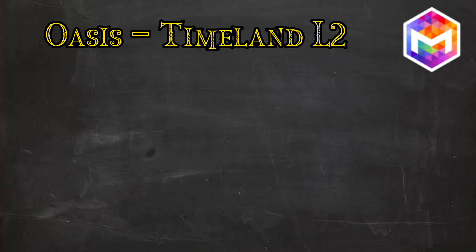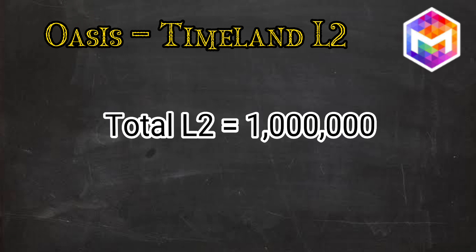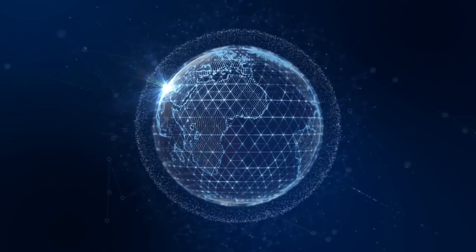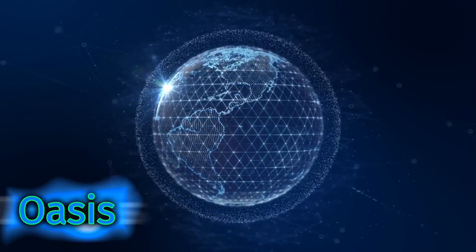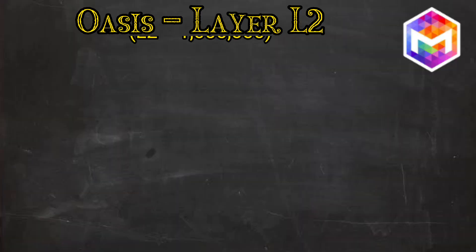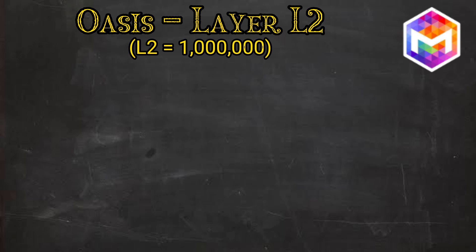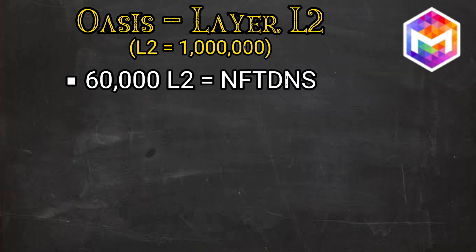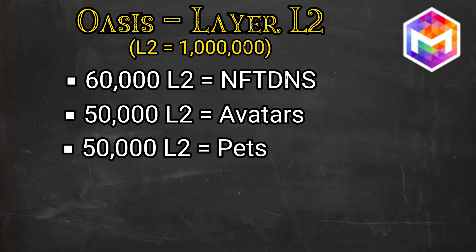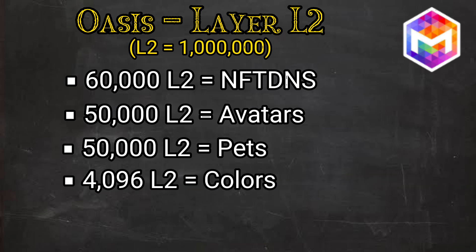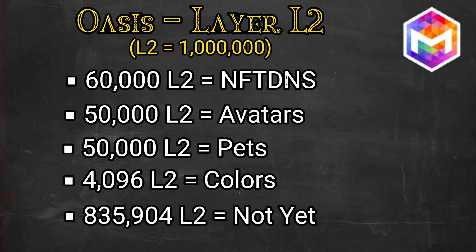Timeland Layer 2, named as OASIS — we discussed Layer 2 and its distributions in the previous video. In this section, I will explain the properties of the OASIS layer. Layer 2 is a checkboard of 1,000 by 1,000 pieces, resulting in a total of one million pieces. Out of these one million items, 60,000 L2 items have properties of NFT and DNS; 50,000 L2 items are avatars; 50,000 L2 items are pets; 4,096 L2 items are colors. The rest of the items have not yet been assigned any properties.